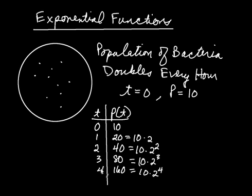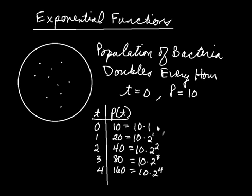You can see what's happening here: in every situation, the time becomes the exponent. The time at four hours gives exponent four; three hours gives exponent three. When the time is one, you can think of two as two to the first. And even when the time is zero, ten can be written as ten times one, and one can be thought of as two to the zero — so ten times two to the zero. In each case, the time gives you the exponent.